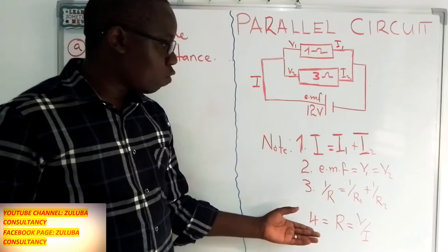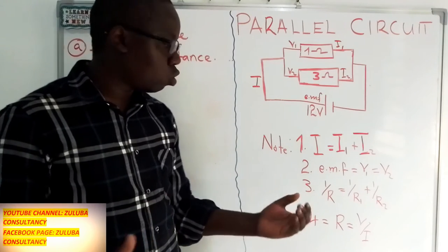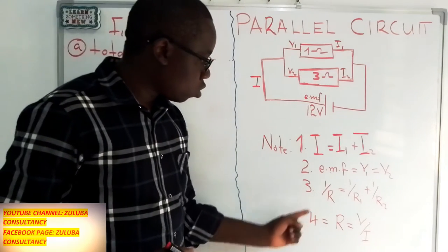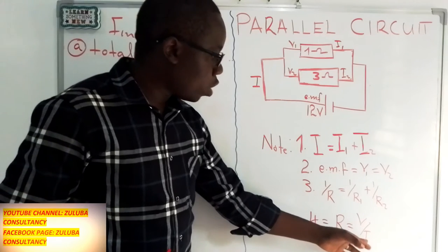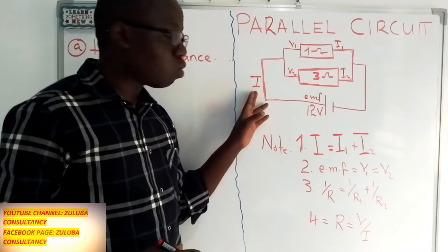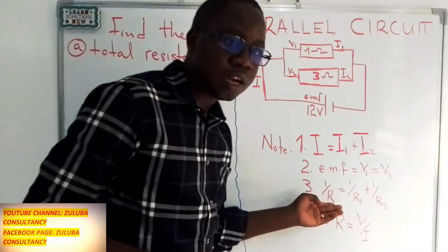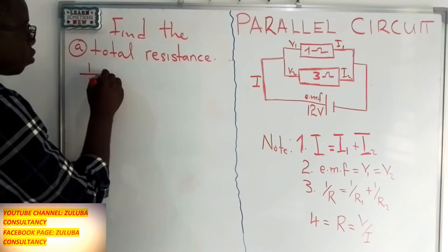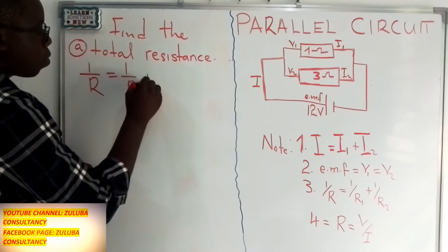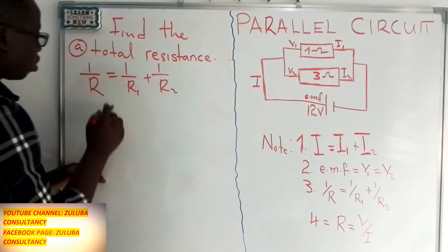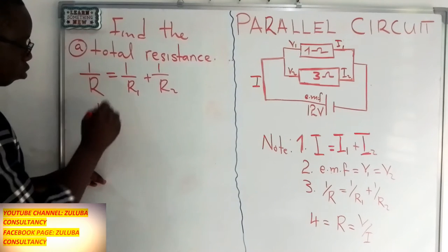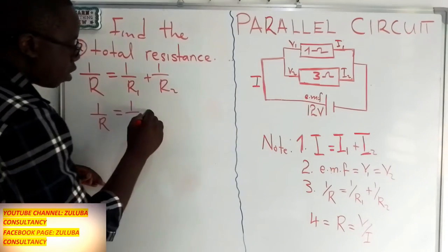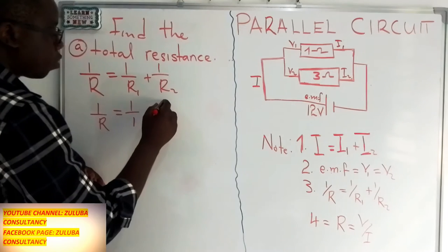We cannot use equation 4 because we do not have the current passing through the main circuit, so we settle for equation 3. Equation 3 states: 1 over the total resistance is equal to 1 over R1 plus 1 over R2. Substituting: 1 over R total equals 1 over 1 ohm plus 1 over 3 ohms.